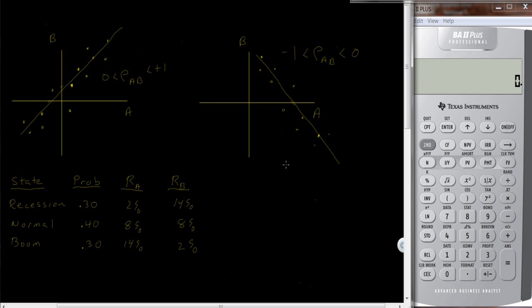So let's see if we can do a calculation. Down here I have three states of the world: recession, normal growth, and a boom period or high economic growth period. The probabilities are 30% chance of recession, 40% chance of normal growth, and a 30% chance of a boom or high period of growth.